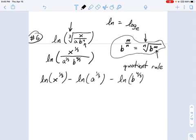And now you can see these exponents can be dealt with. We've done this before. This is just one-third natural log of x minus one-third natural log of a minus four-thirds natural log of b.